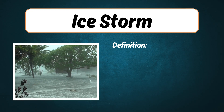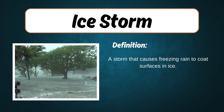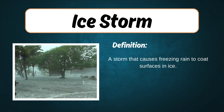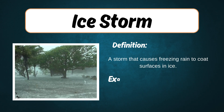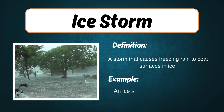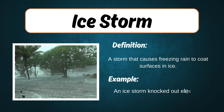Ice storm. Definition: A storm that causes freezing rain to coat surfaces in ice. Example: An ice storm knocked out electricity across the region.